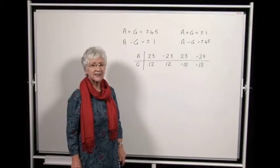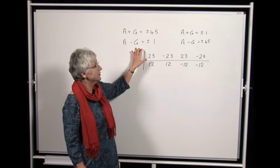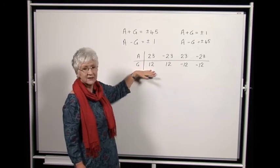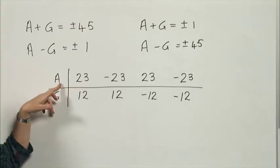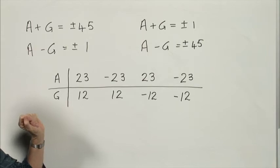So if we consider the case with 1 and 45 to begin with, we see that we have four equations to solve. And they give us quite a nice solution where we see that A can only be plus or minus 23, and G can only be plus or minus 12.